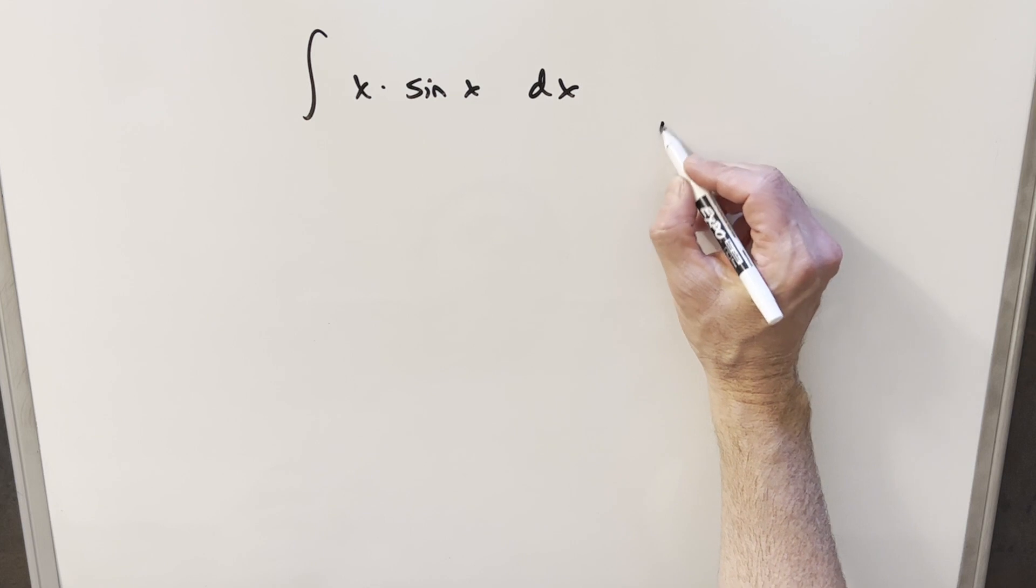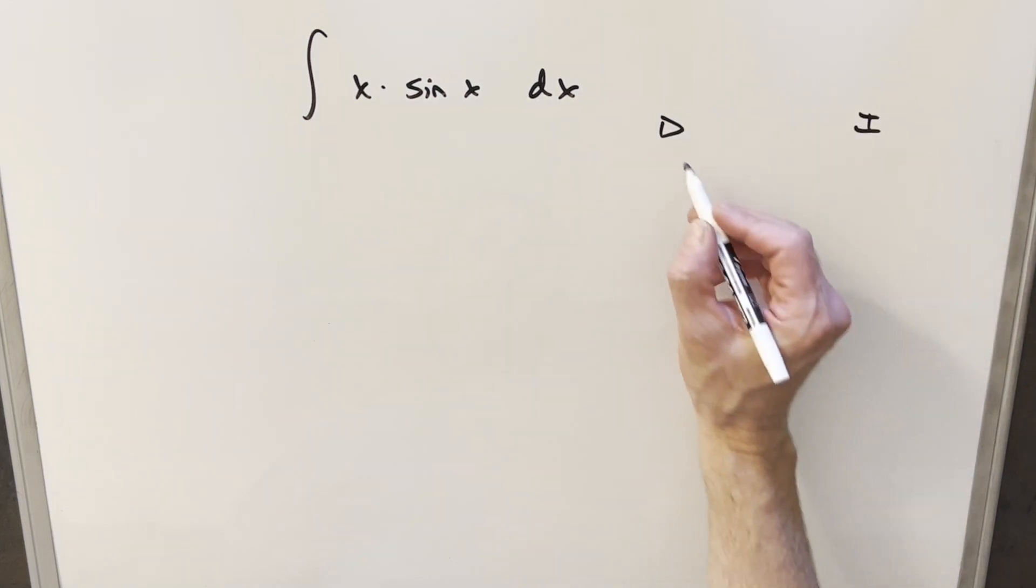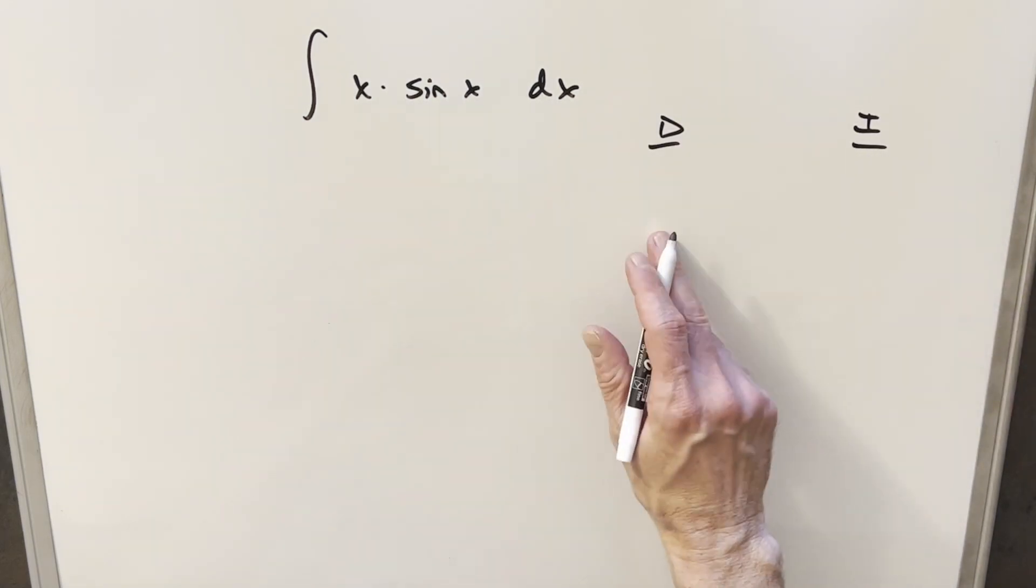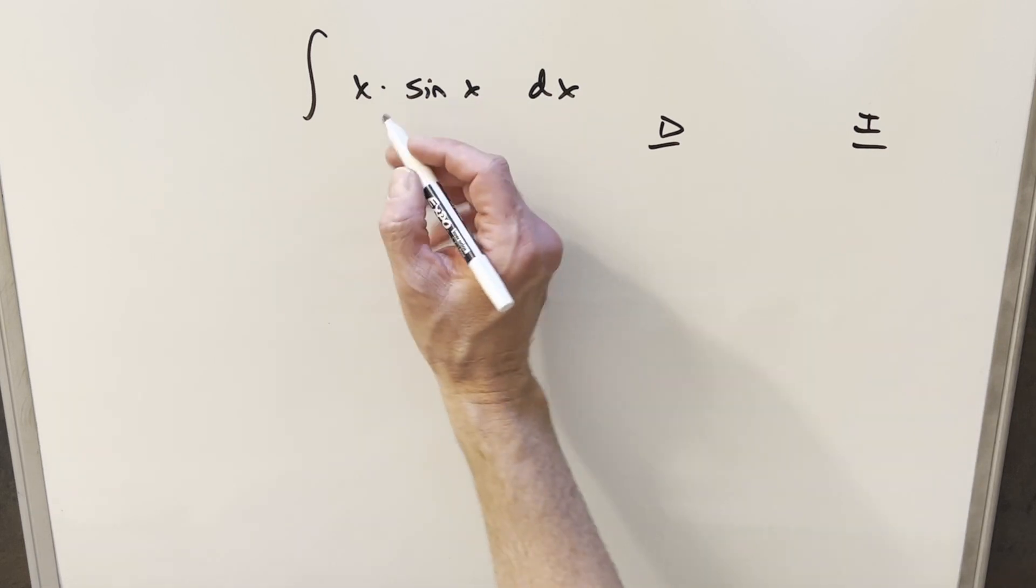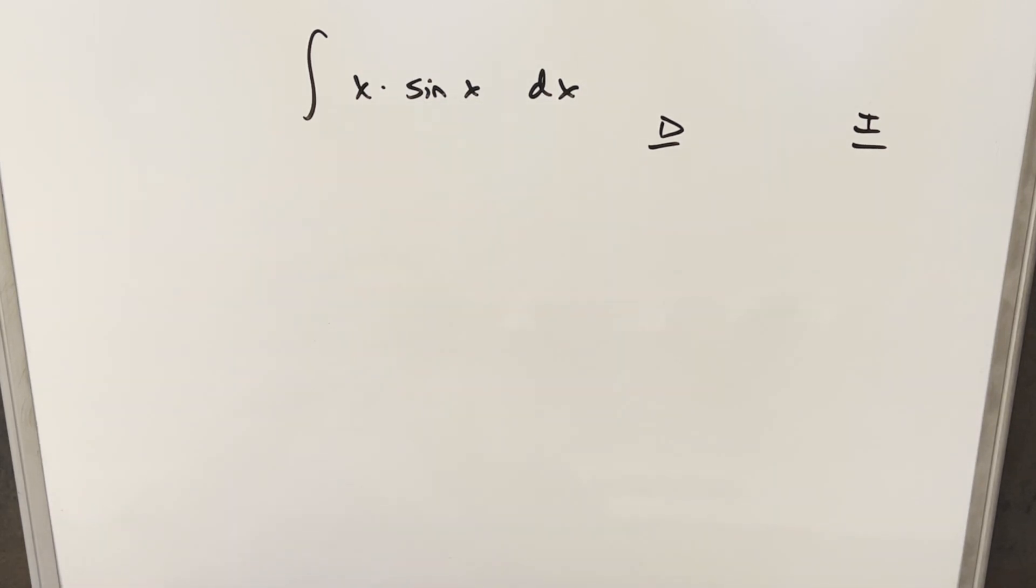For integration by parts, let's look at the DI method or tabular integration. We're going to have two columns, one to differentiate, one to integrate. When we choose, we have two functions here, x and sine x. We usually choose our functions to make it easier on ourselves.